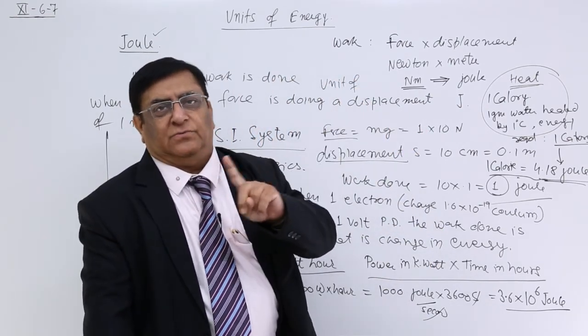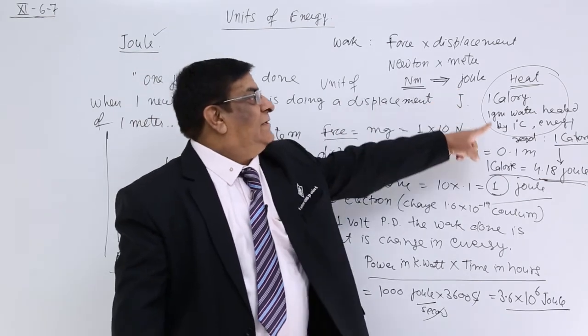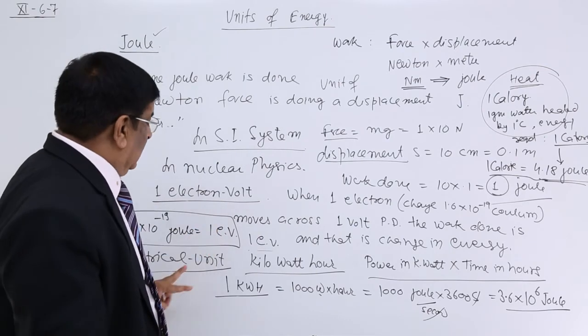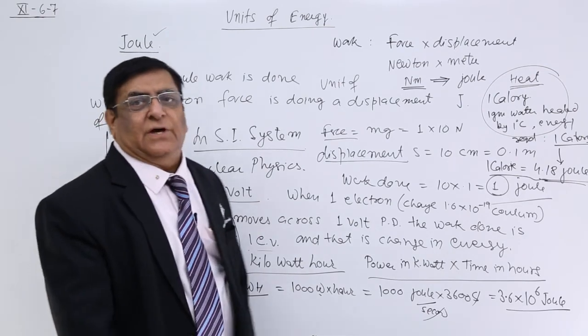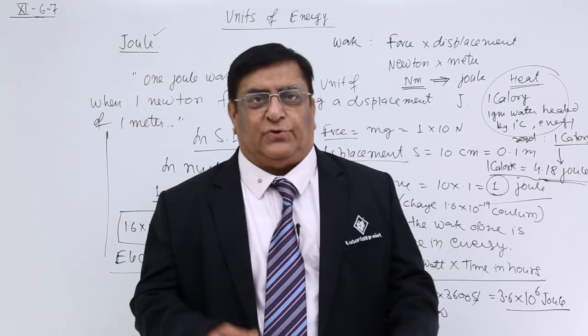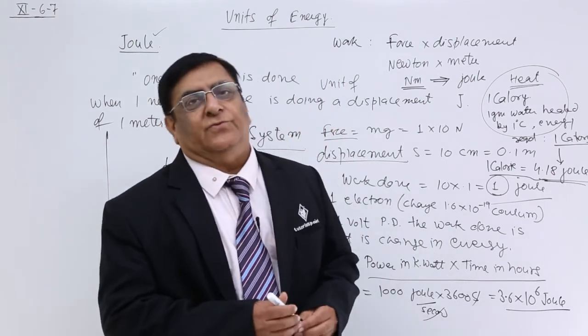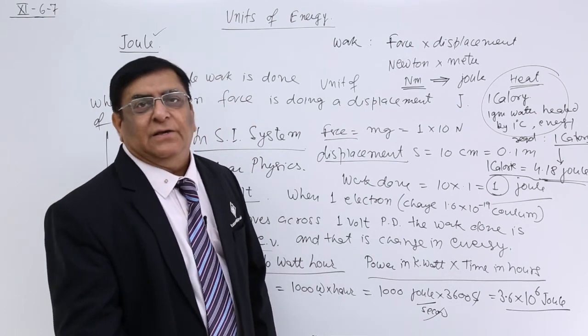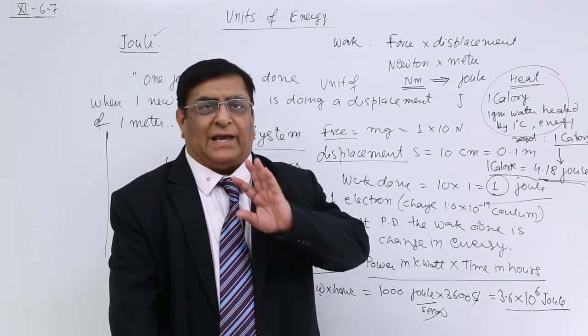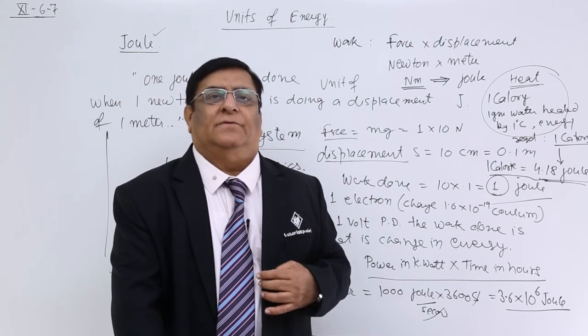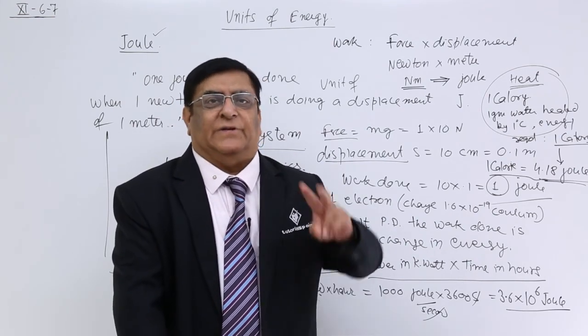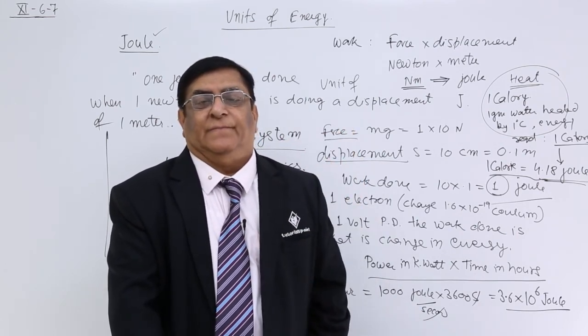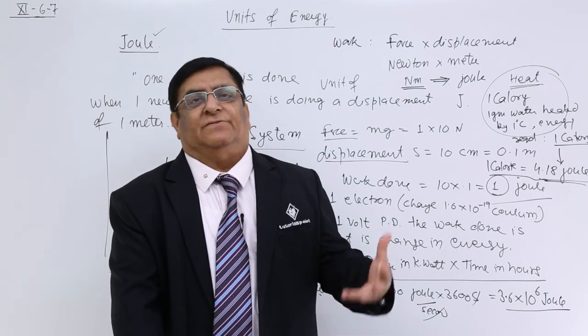So we have learnt there are 4 types of energy units in different chapters of physics. Mechanical, 1 joule, work is done. Heat, 1 calorie. Nuclear physics, 1 electron volt. Electricity, 1 kilowatt hour. These are the few units of energy we use in different topics of physics. Now, in the next topic we will see how mechanical energy, there are conversions of energy within potential energy and kinetic energy during one motion. And what is the meaning of conservation of energy.